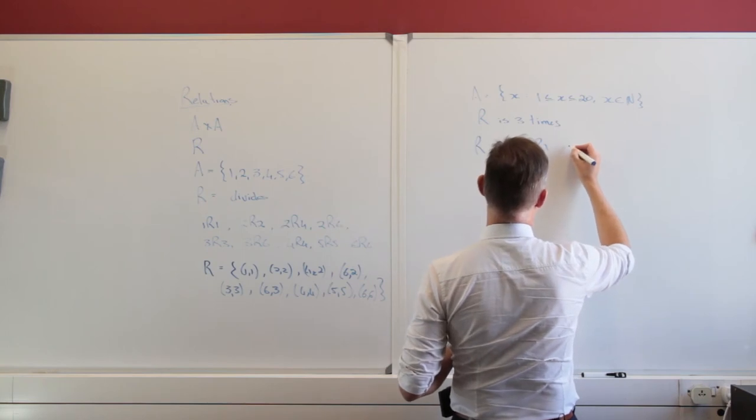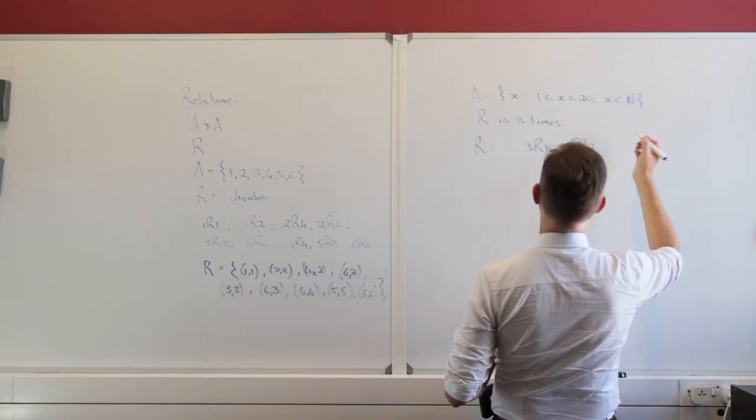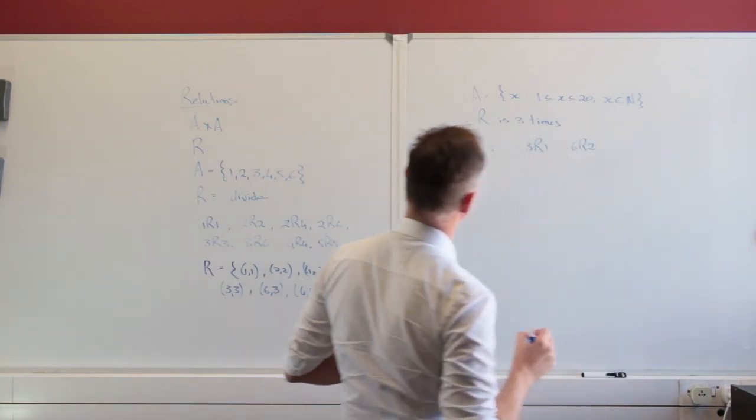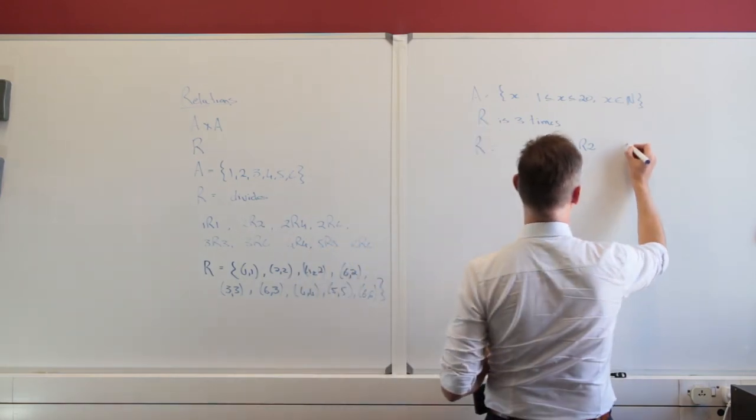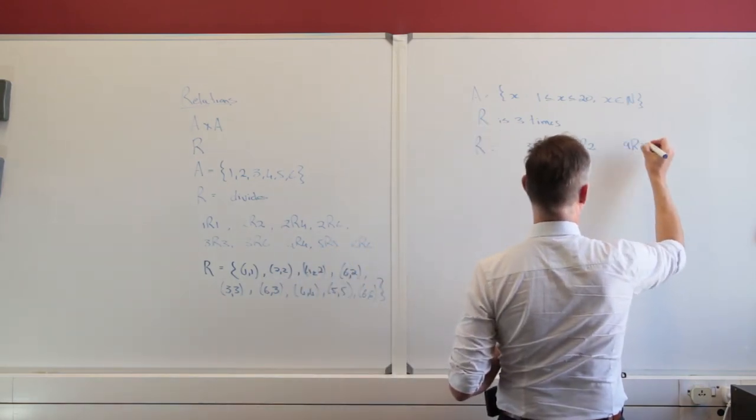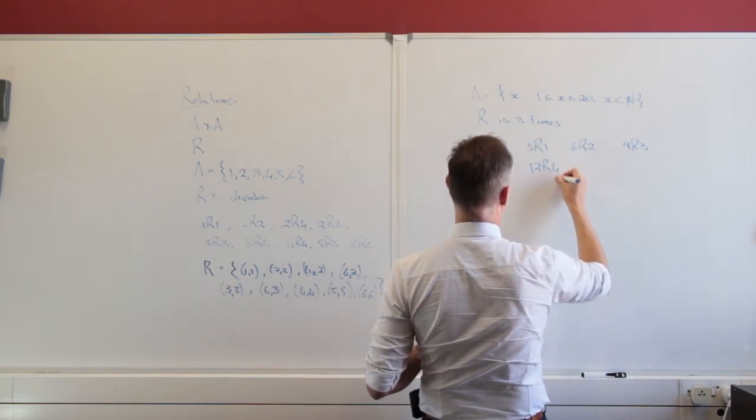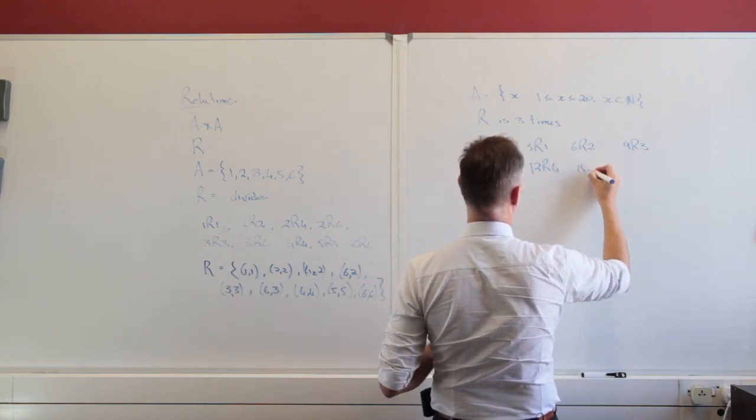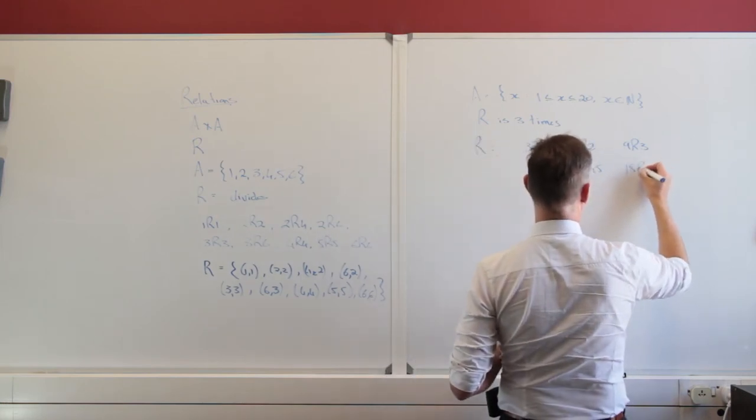So 3 is 3 times 1. 6 is 3 times 2. 9 is 3 times 3. 12 is 3 times 4. 15 is 3 times 5. 18 is 3 times 6.